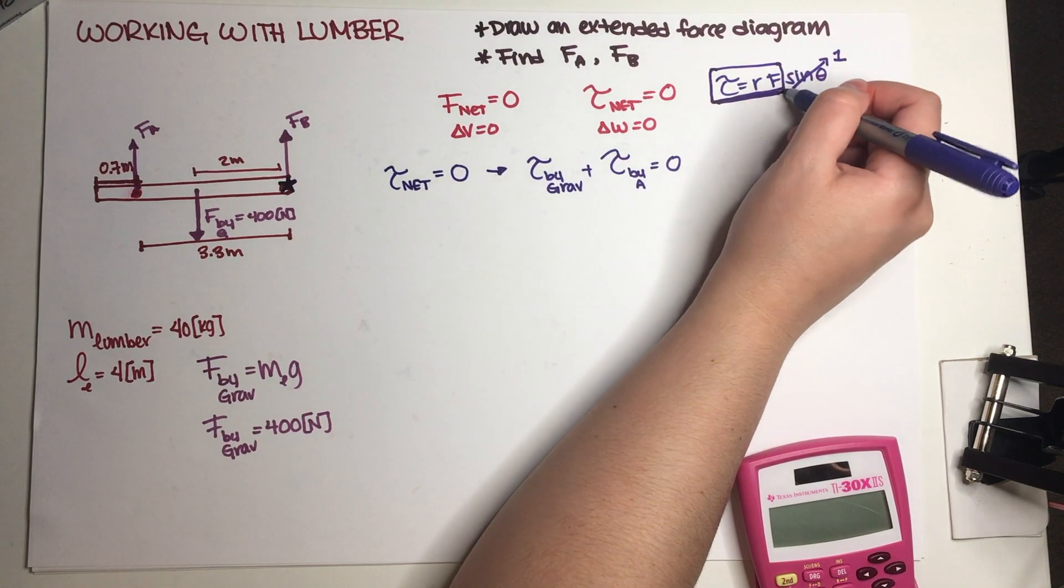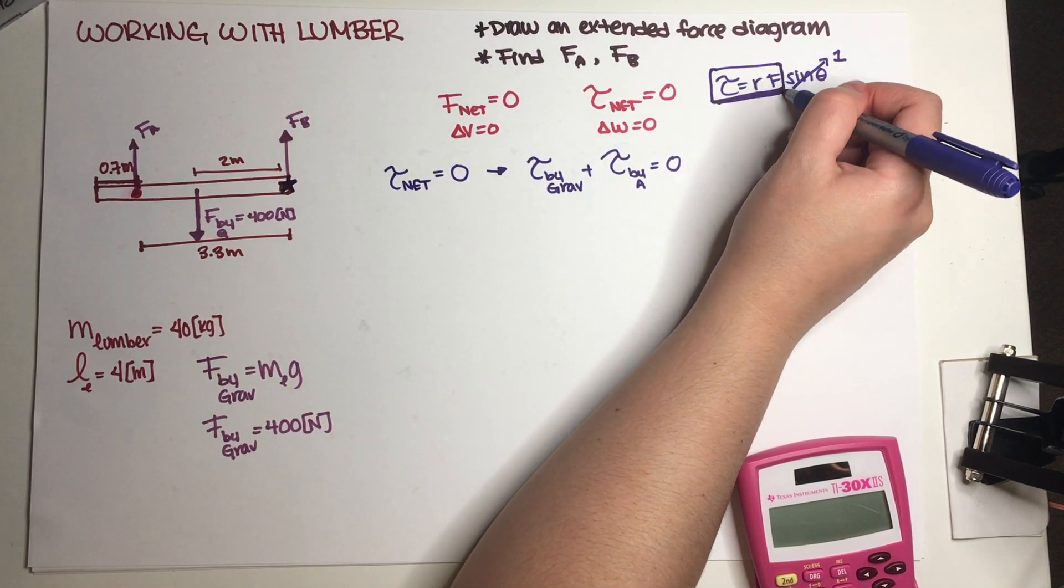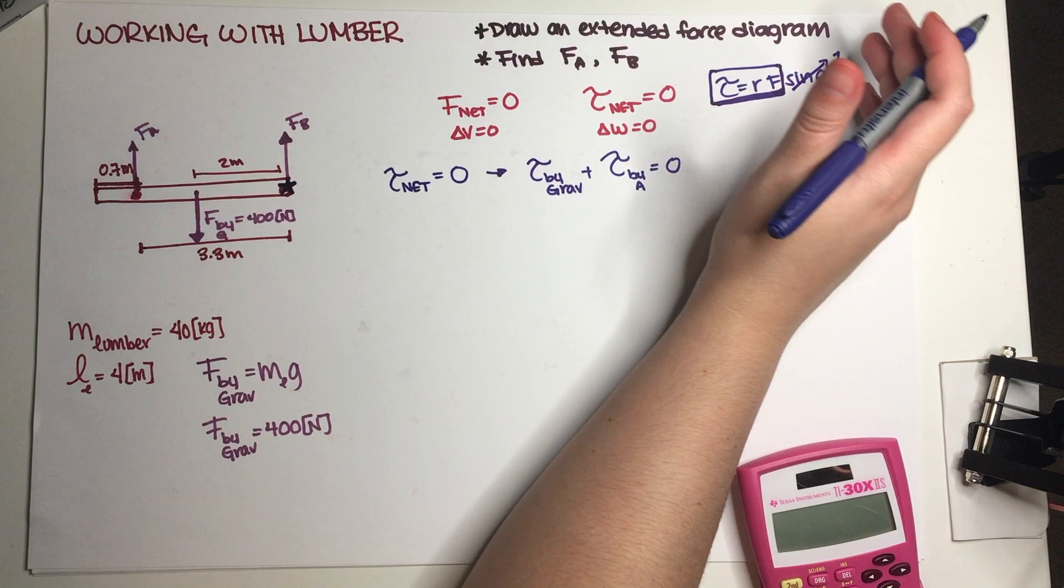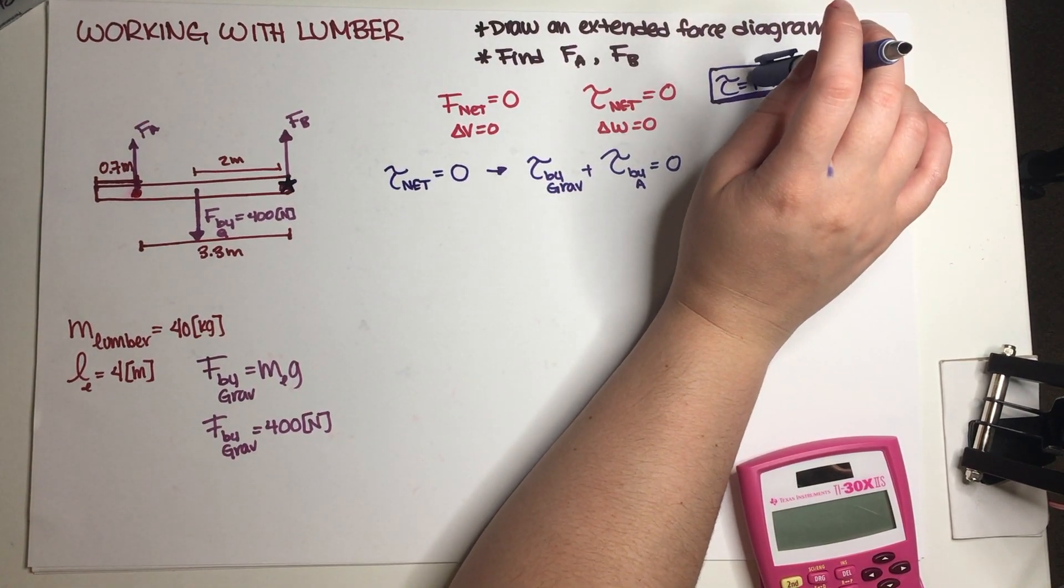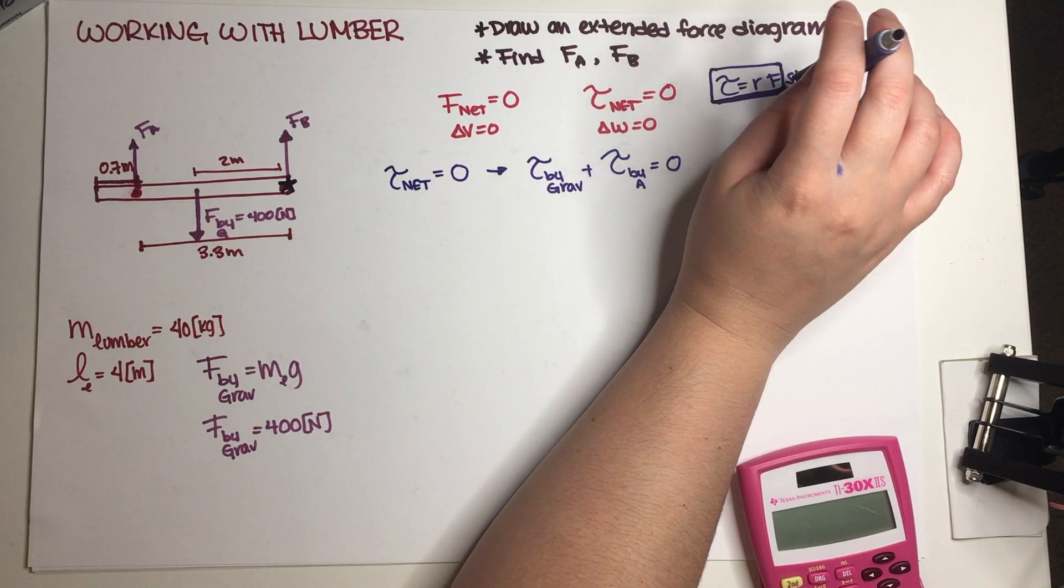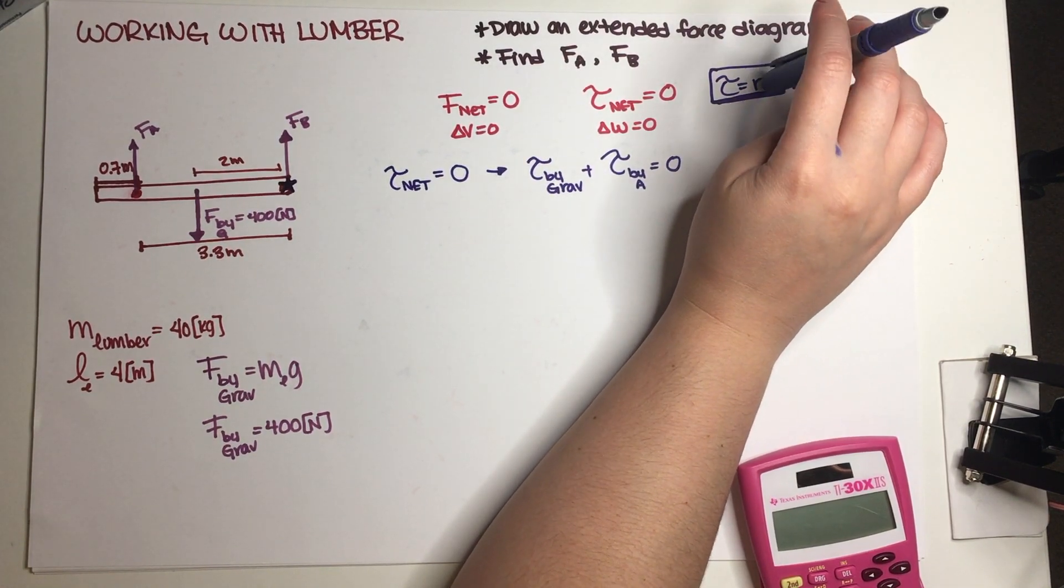So I'm just going to use r·F, because I don't want to be writing sine sine sine and then just have it be equal to one every single time. In this problem our r and F are always exactly perpendicular. So that is why this works. So let's just go ahead and do that.